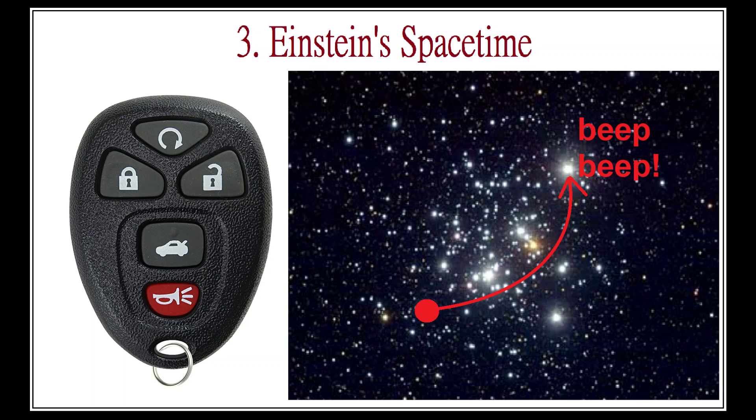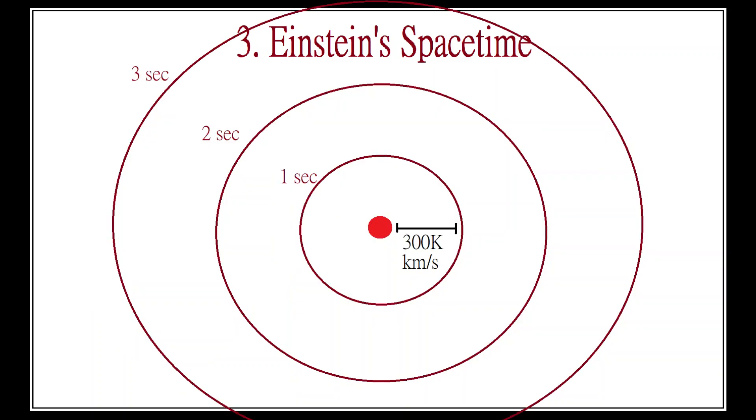There is nothing you can build or design to circumvent this speed limit of events. No given cause in the universe can have its effect at a rate faster than 300,000 kilometers per second, not even light.